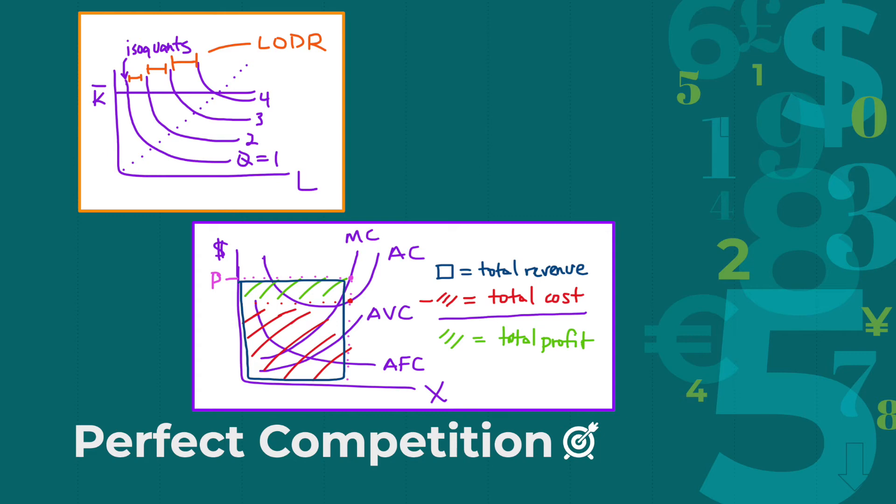Since capital is fixed, they will produce at the points where these isoquants and the fixed amount of capital intersect, depending on the amount of labor they can afford. Note that the gaps between isoquants gets wider and wider as labor increases, meaning it takes increasing incremental amounts of labor to reach one more unit of output.